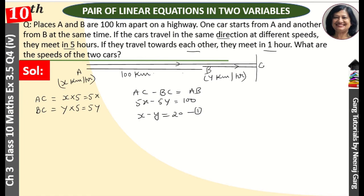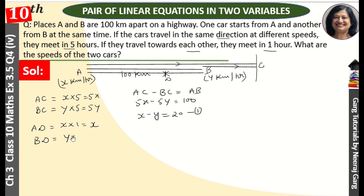Now, if they travel towards each other, they meet in 1 hour. Car A moves towards B, and car B moves towards A. After 1 hour they meet at a point. The total distance covered equals 100 km. So x plus y equals 100. This is our second equation.